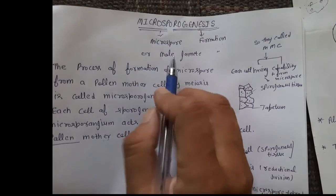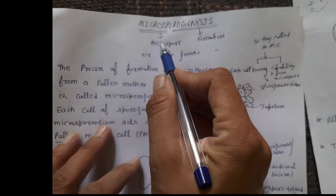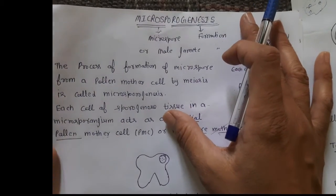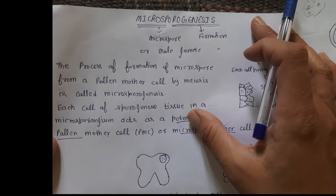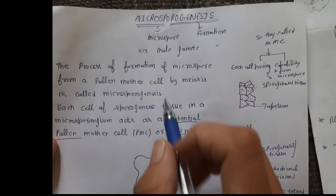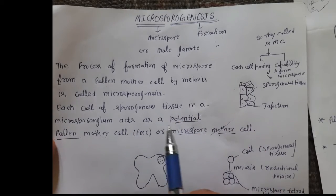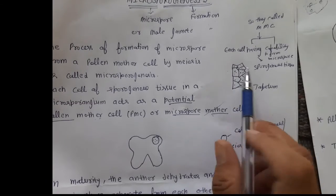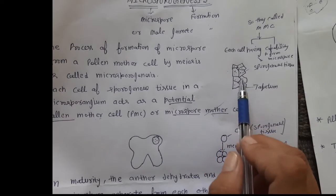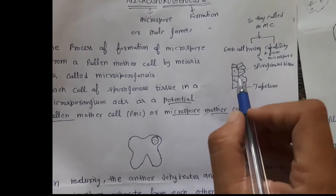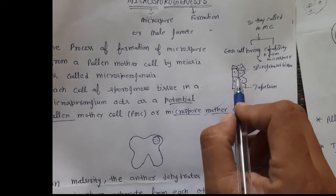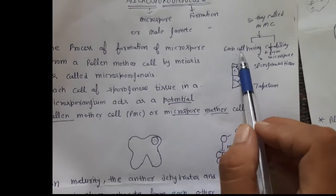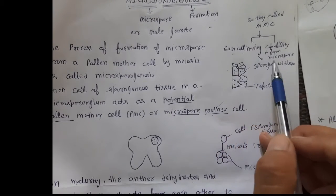We know what a microspore is — it is the male gamete. Now, the sporogenous tissue has the capability: every cell within the sporogenous tissue has the capability to form microspores. This is why it is called sporogenous tissue.